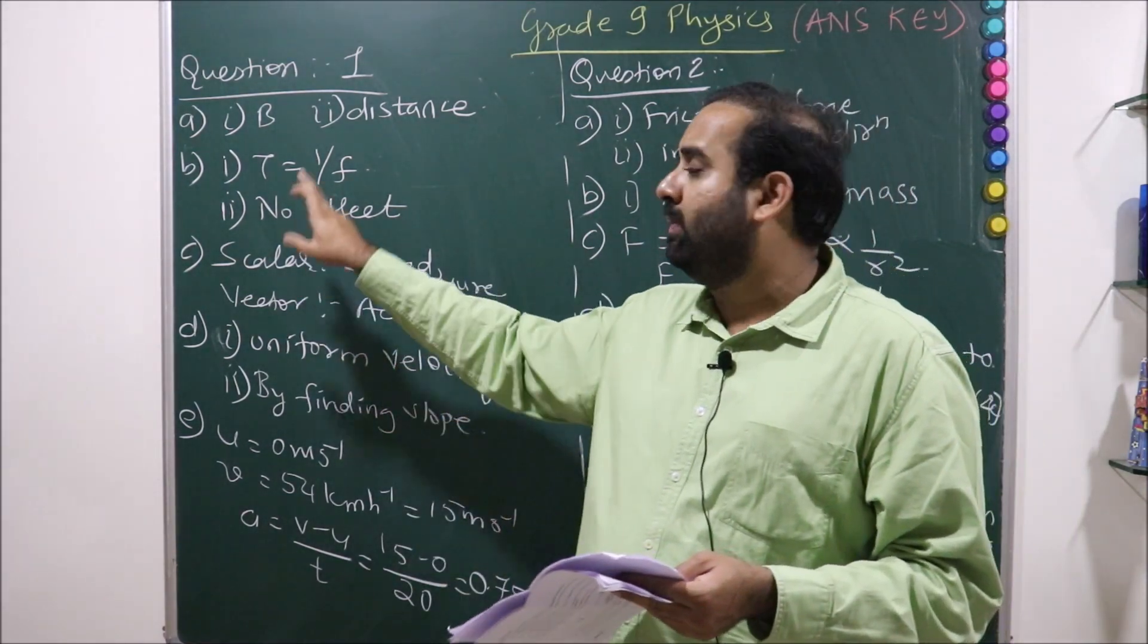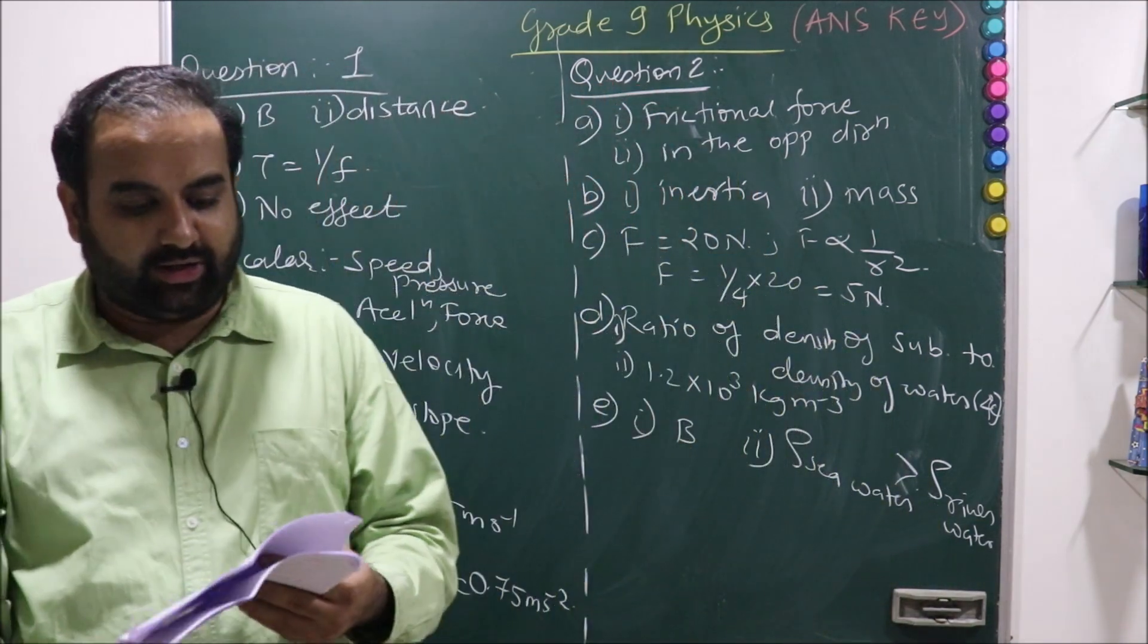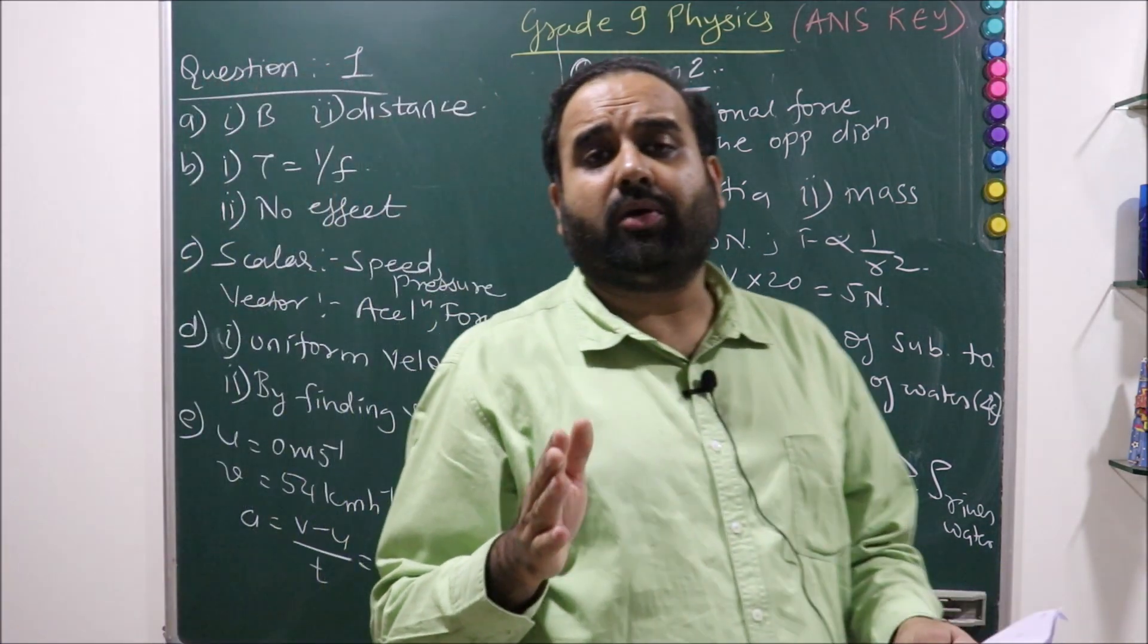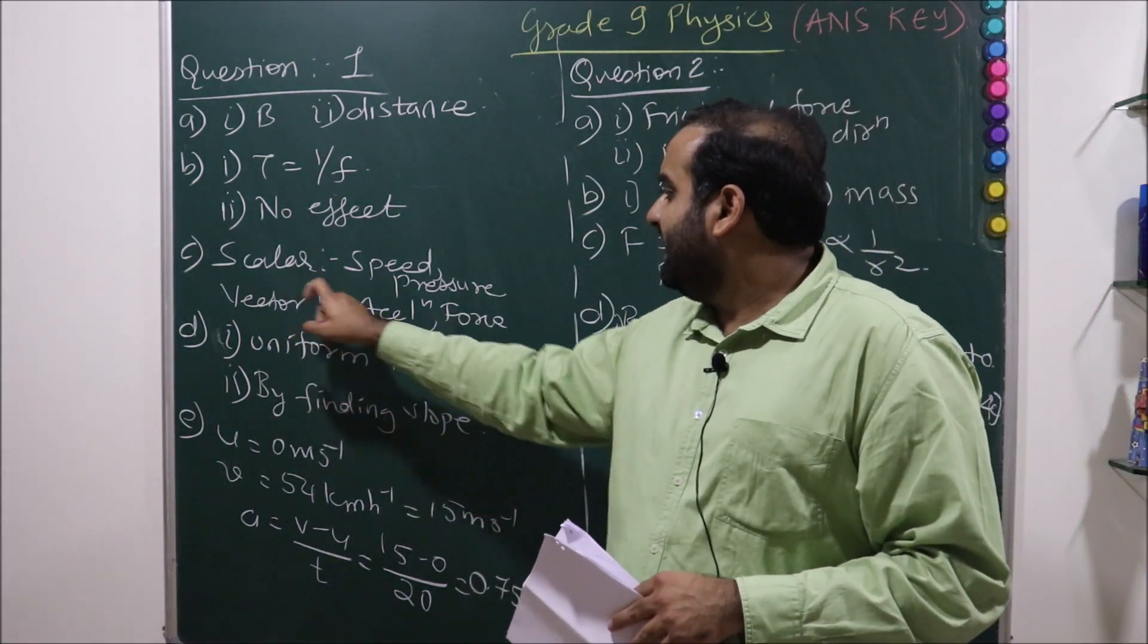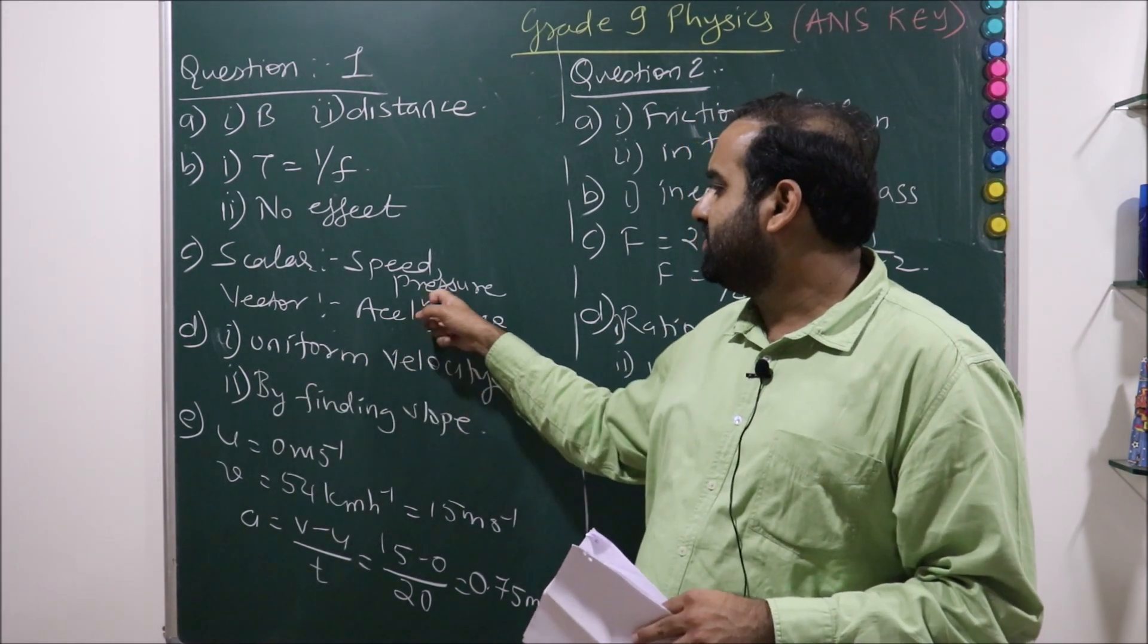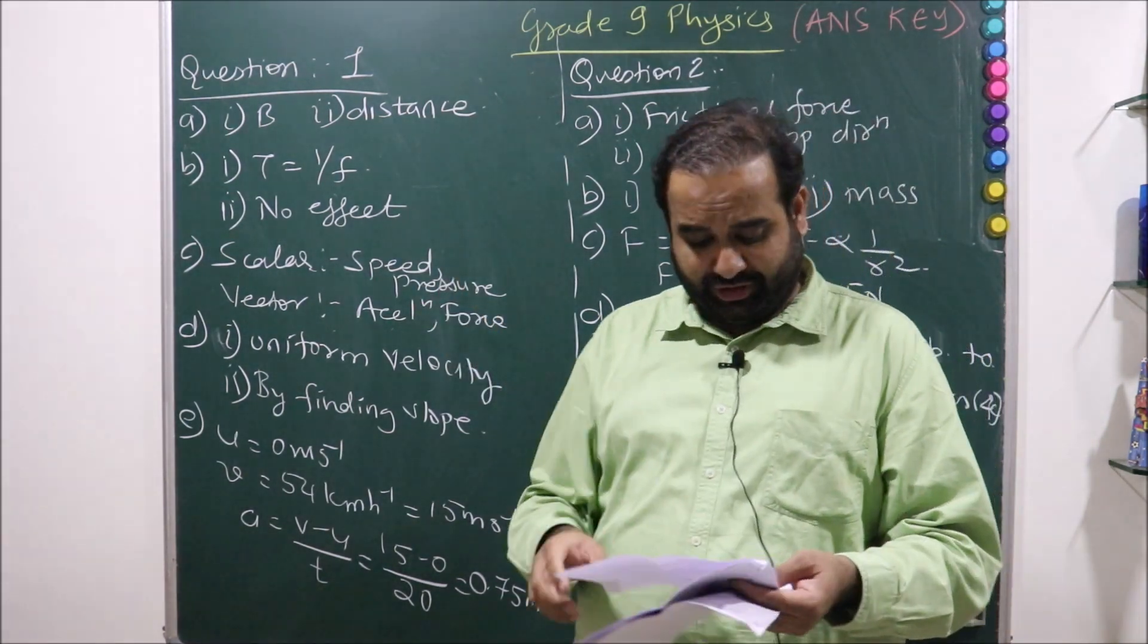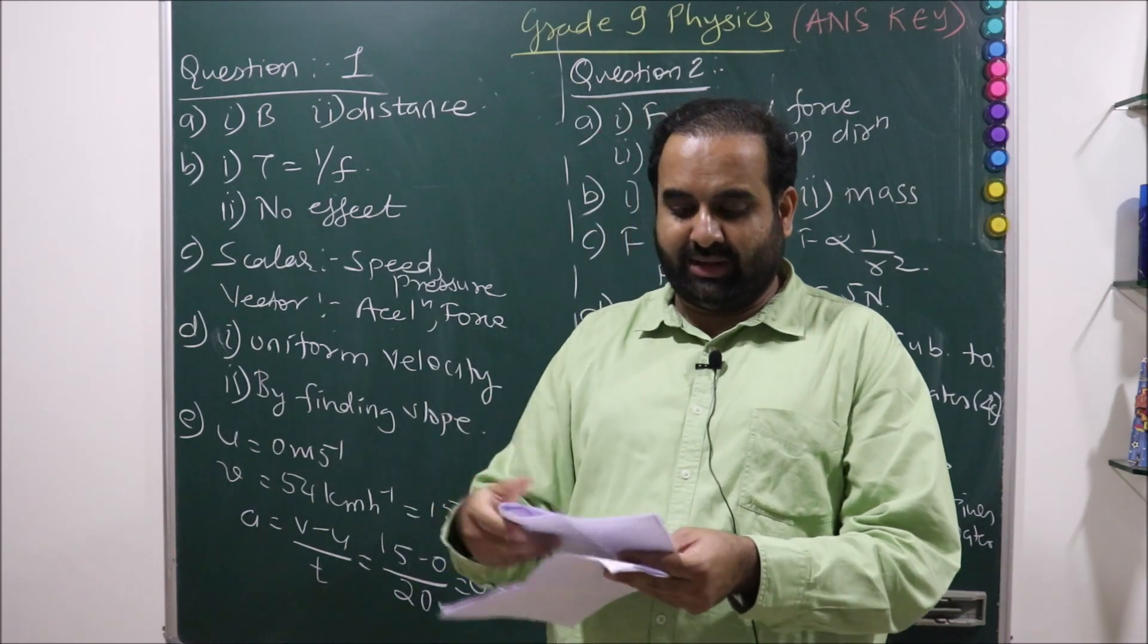Certain physical quantities were given and you had to classify them accordingly. Which one was scalar and vector? Scalar is speed and pressure, and vector is acceleration and force. Now many students messed up over here considering pressure also as a vector quantity, so no, that is wrong. Pressure is a scalar quantity.